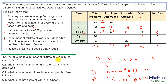Let's not solve much and see how many questions we can answer. Question one: total failures by Varun = 36. Question two: maximum failures in any one game. Question three: problems attempted by Varun in dance = 18. Question four: net score of Varun in dynasty — we need to find that value.